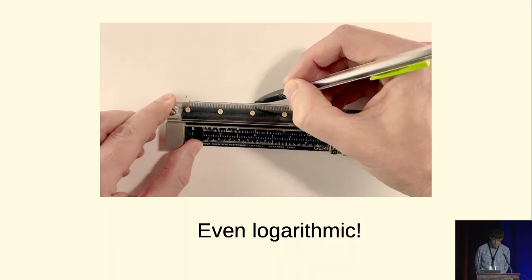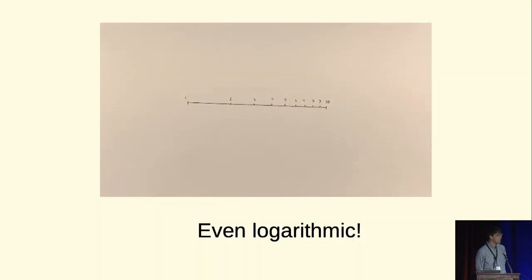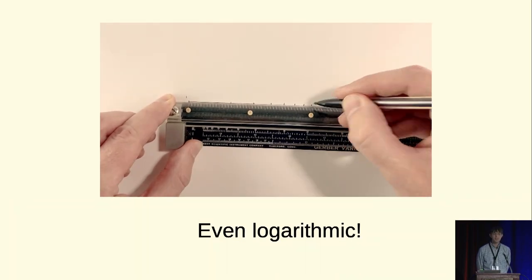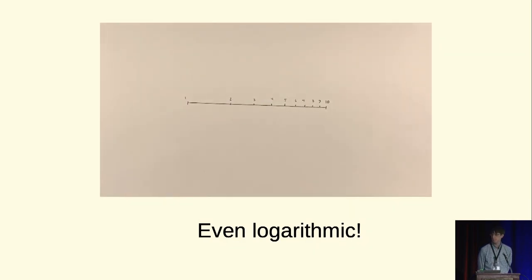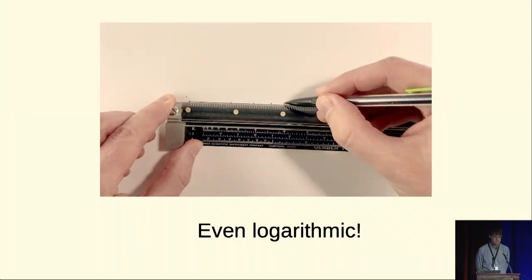If you look closely you can see there's other scales written on the hard part of the variable scale. You can use a logarithmic scale that's written on there to make equally spaced logarithmic subdivisions rather than linear subdivisions. So you can do some fairly sophisticated things.